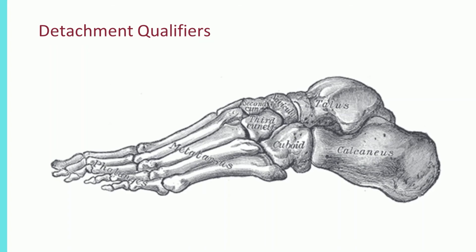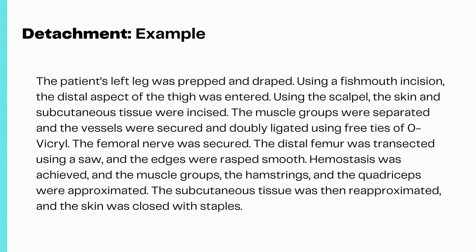Now let's look at an actual coding example for detachment. The patient's left leg was prepared and draped. Using a fish-mouth incision, the distal aspect of the thigh was entered. Using the scalpel, the skin and subcutaneous tissue were incised, the muscle groups were separated, and the vessels were secured and doubly ligated. The femoral nerve was secured. The distal femur was then transected using a saw and the edges were rasped smooth. Hemostasis was achieved, the hamstrings and quadriceps were approximated, the subcutaneous tissue was re-approximated, and the skin was closed with staples. The amputation was performed at the distal femoral level.